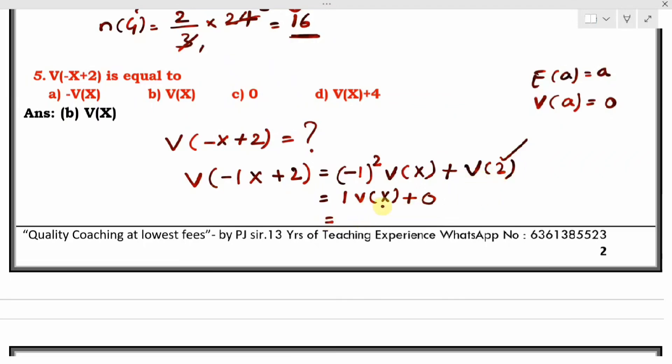So variance of 2 is 0. Equals variance of X multiplied by 1, that is variance of X itself. So the answer is variance of X, option B. Variance of X is the correct answer.